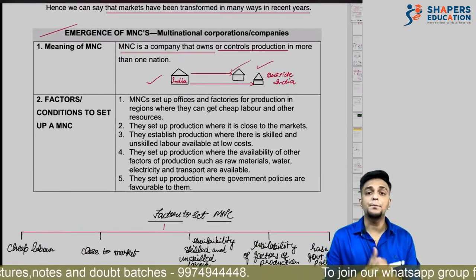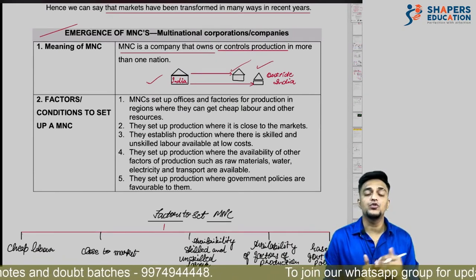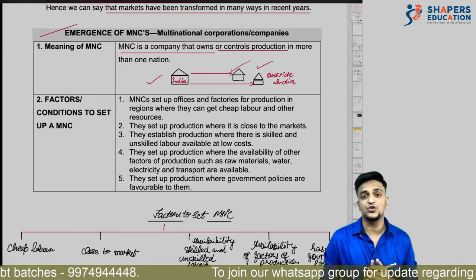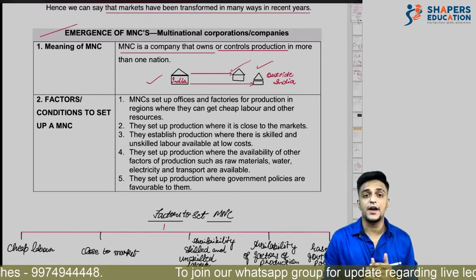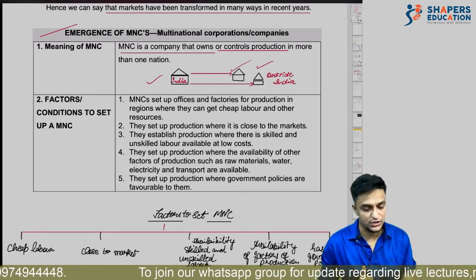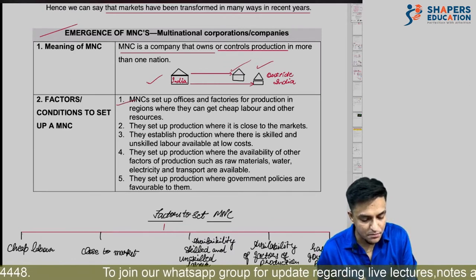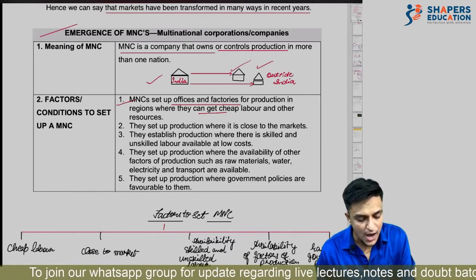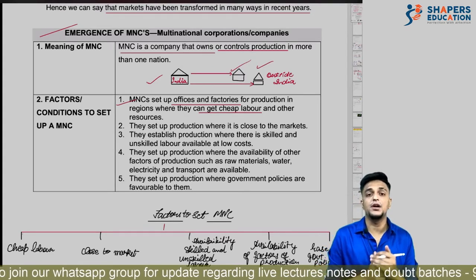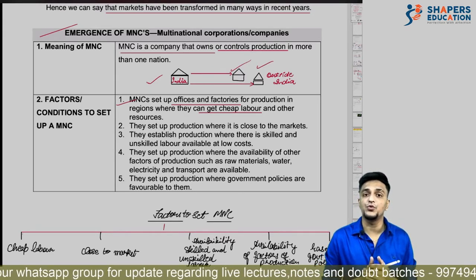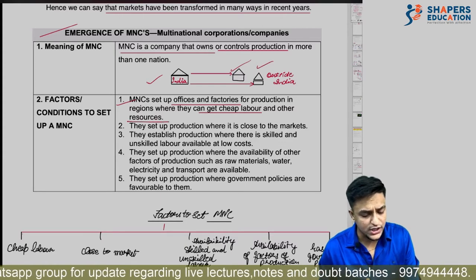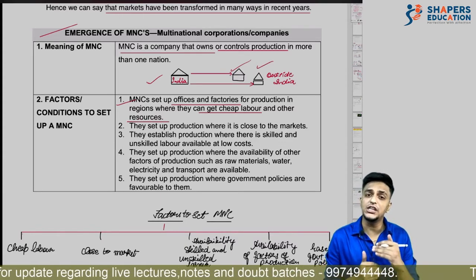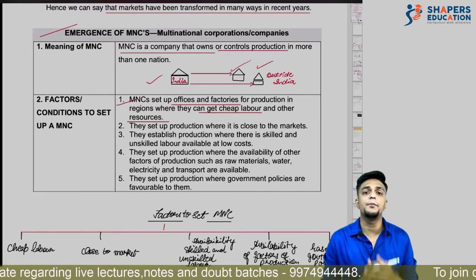Now we see — when any MNC wants to establish itself in another country, which factors does it consider? First, MNCs will set up their offices and factories for production where they get cheap labor at low wages, and other resources like electricity and raw materials are also available cheaply.